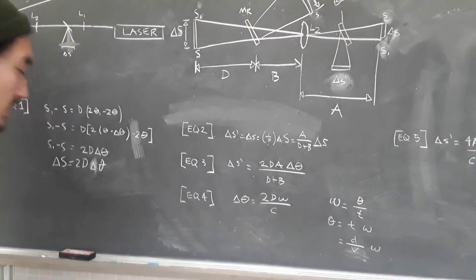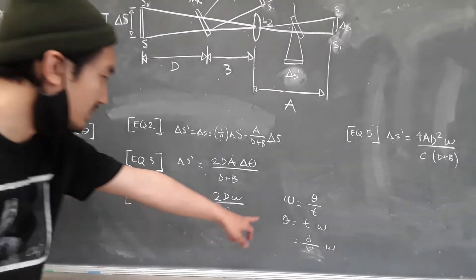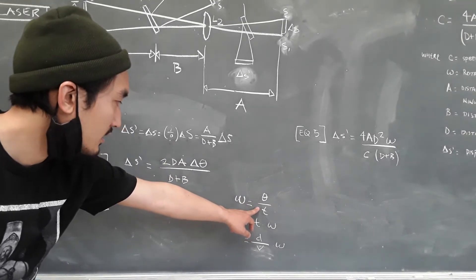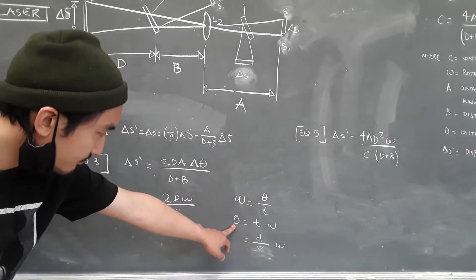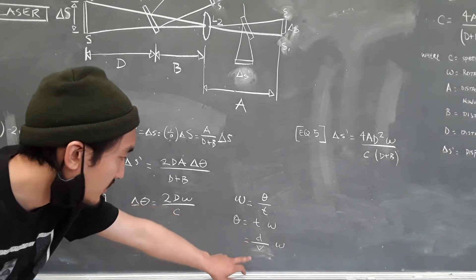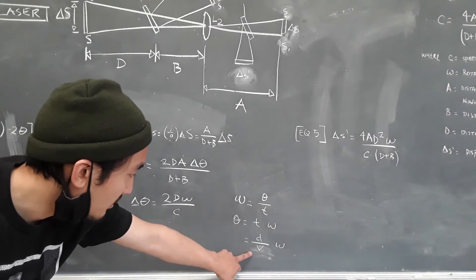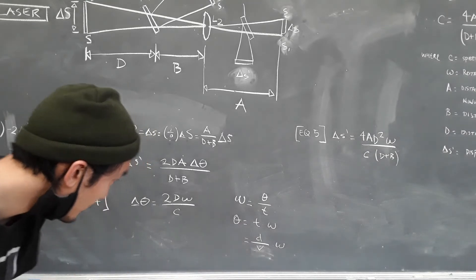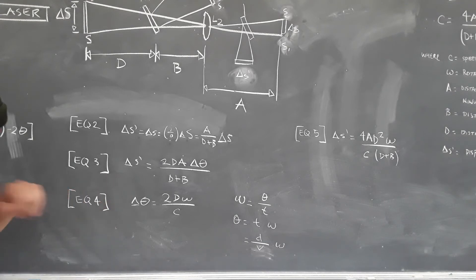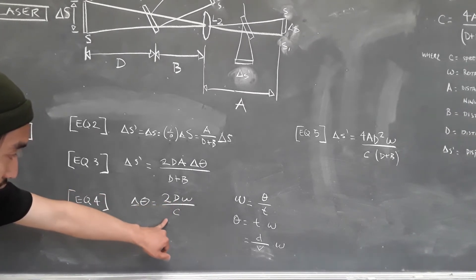In equation four, we express angular velocity omega in terms of the angle theta. Angular velocity omega is simply the angle theta in radians over time. Solving for theta, we get theta equals T times omega. We can also express T as distance D over velocity c — the speed of light. So the angle delta theta equals two times capital D times omega over the speed of light c.